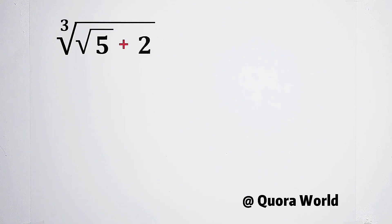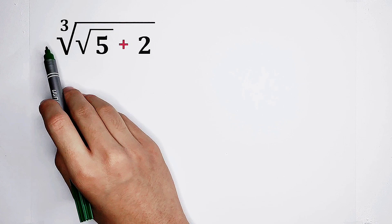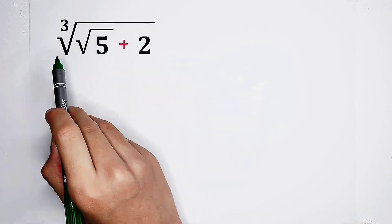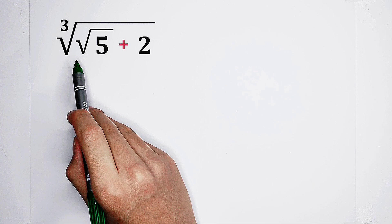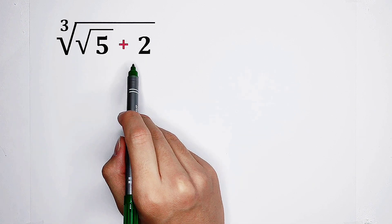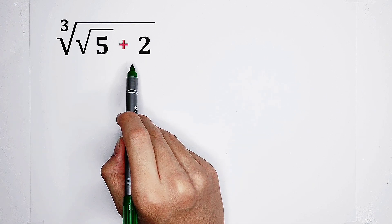Thank Quora World for providing this question. Firstly, observation. The big one is a cube root and the small one is a square root. Don't you think it is so complicated? We don't like the form. So what can we do?